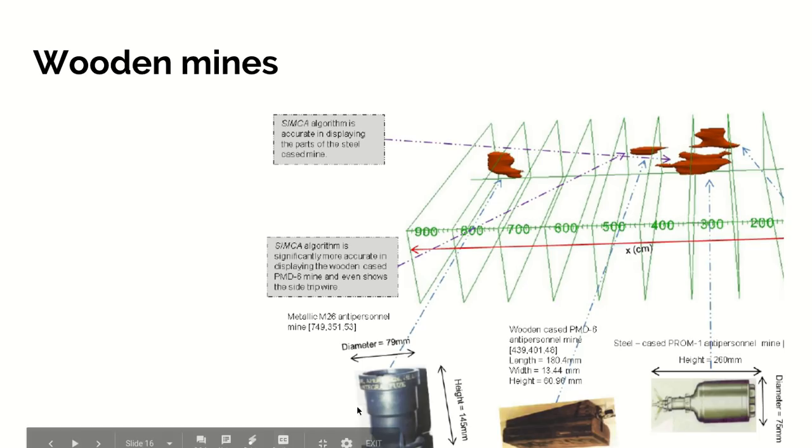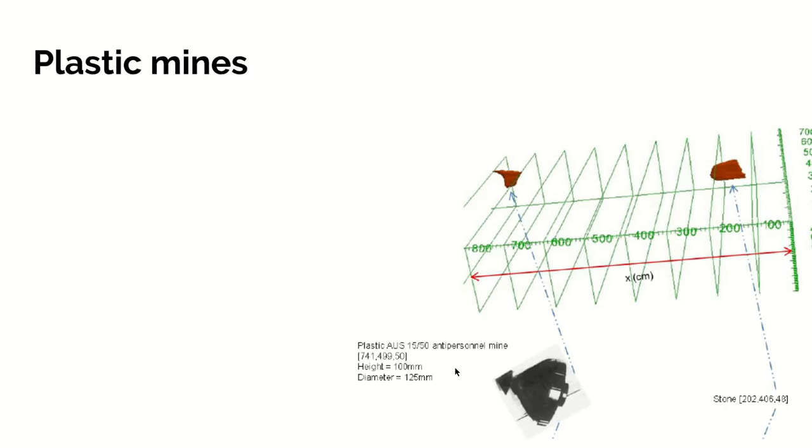It's not surprising this one's detected. It's another steel-cased one, another metal one here. And this is an entirely plastic anti-personnel mine, again picked up and easily detected. What we're getting here are actually three-dimensional pictures below the ground of the objects that have been discovered.